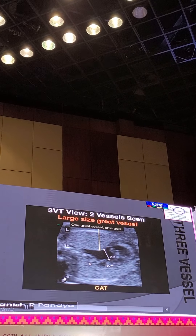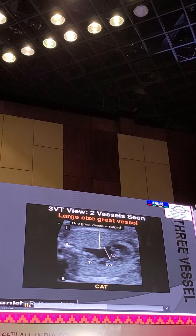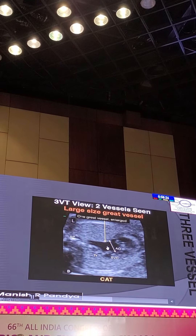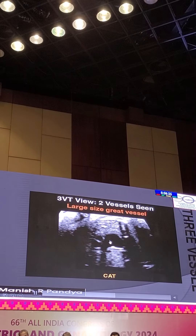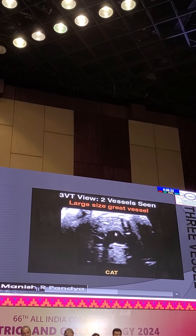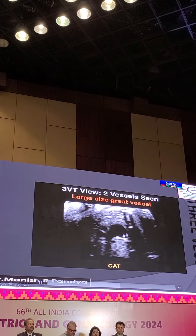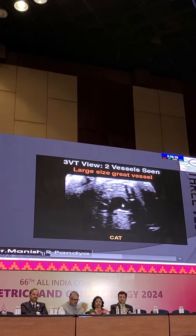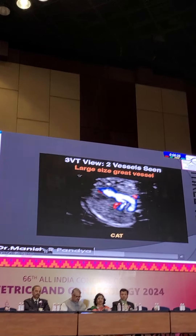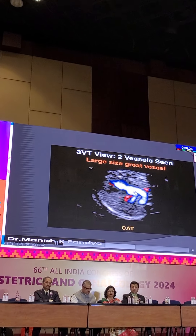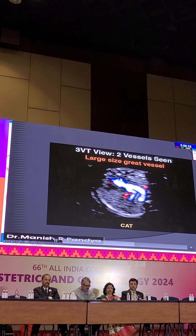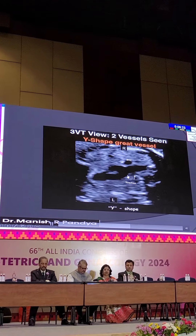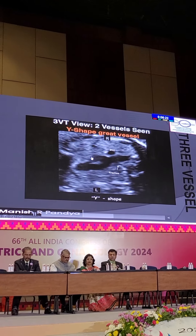If you see a single dilated vessel, this is a common arterial trunk. Rather than three vessels, you can see one dilated vessel — it is a case of common arterial trunk, and it is very well seen in the three-vessel tracheal view. On color, you can see two vessels flowing from the common arterial trunk.